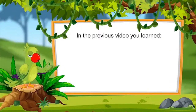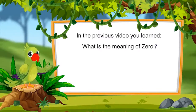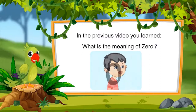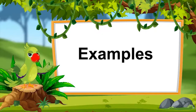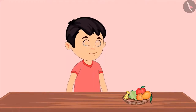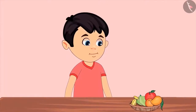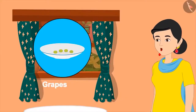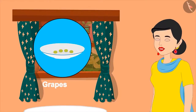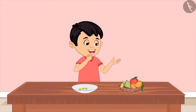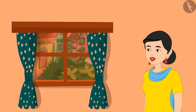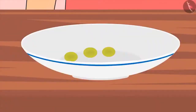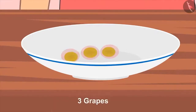In the last video you learned the meaning of zero — when there is not a single object left, it is called zero. In this video we will see examples of zero in which objects decrease one by one. Chotu has started eating fruits. His mother says Pinky had eaten grapes and only four are left. Chotu eats one — three grapes remain. He eats another — two remain. He eats one more — one grape is left.